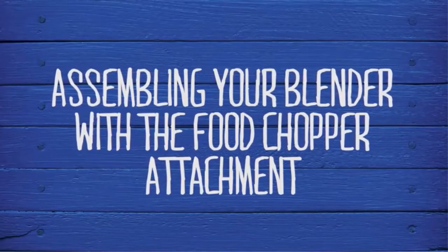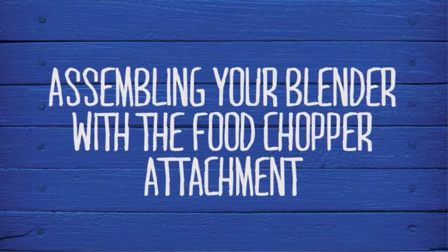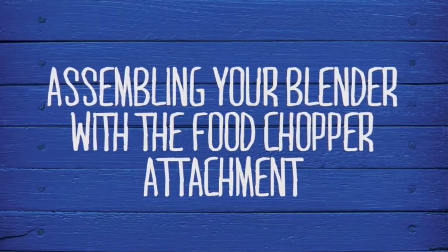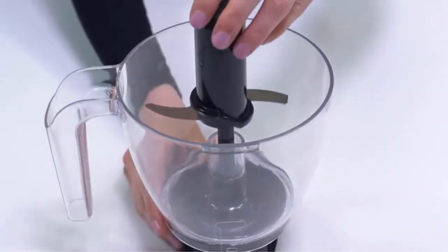If your particular Oster Classic Series blender comes with or is compatible with the food chopper attachment, you can easily turn your blender base into a versatile kitchen tool. Once you have assembled the adapter onto the bowl, you need to carefully place the S blade onto the center post.